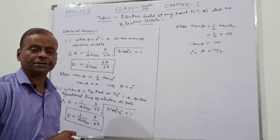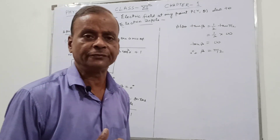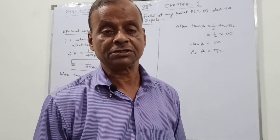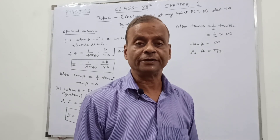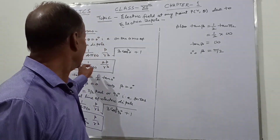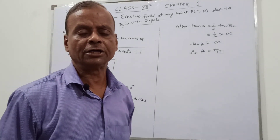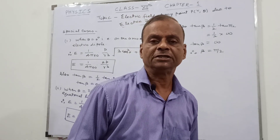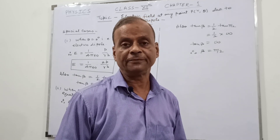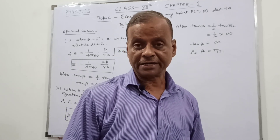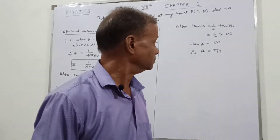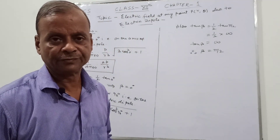These are the two particular cases. But in general, if you are given some value of theta — suppose theta is 45 degrees, 30 degrees, or 60 degrees — then you use the general formula: E = 1/(4π epsilon_0) × P/R³ × square root of (3 cos² theta + 1). This is the electric field due to the dipole at any point P(r, θ), where r and theta are the polar coordinates. Thank you very much.